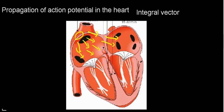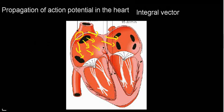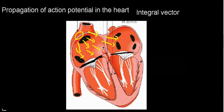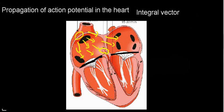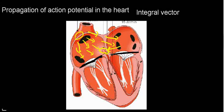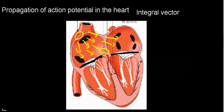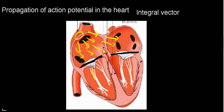We have this fibrous tissue that blocks the action potential from going from the atria to the ventricles, so it is only going to be able to propagate through the AV node, which is a slow conductive tissue. We're not really going to be able to read this on our instrumentation because it's such a small tissue compared to the atria or the ventricles.